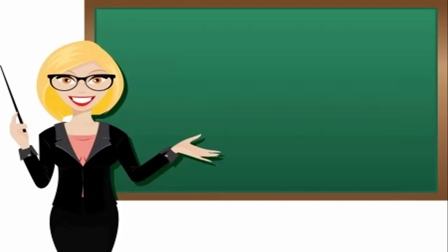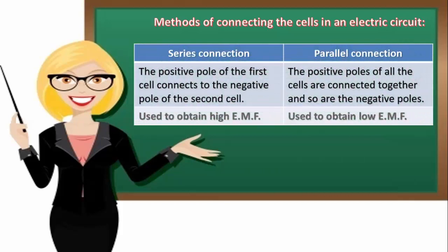Methods of connecting the cells in an electric circuit. Series connection: the positive pole of the first cell connects to the negative pole of the second cell. Used to obtain high EMF.